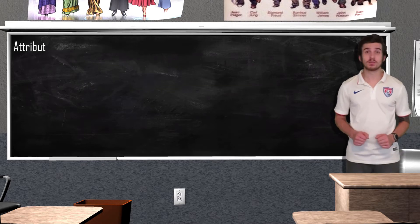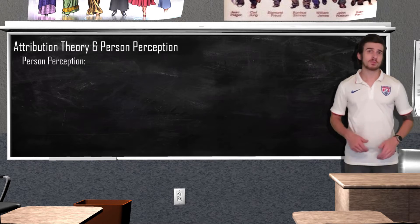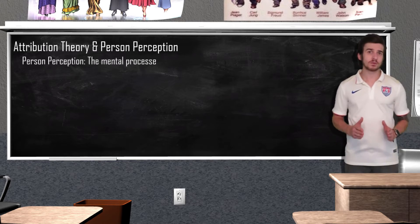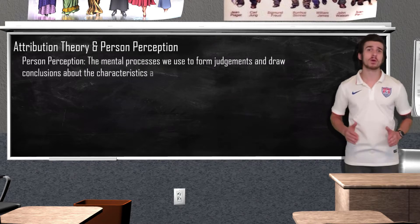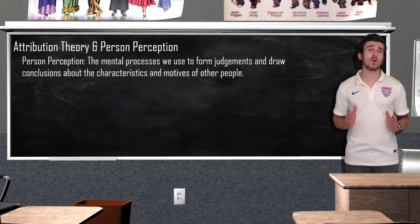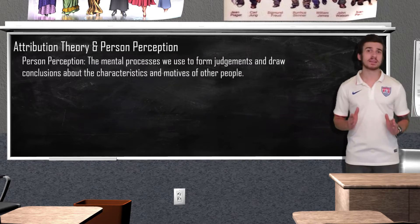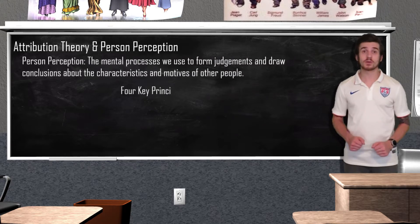Now let's dig a little deeper into the field of social psychology. We're going to take a look at attribution theories and person perception. Person perception refers to the mental processes that we use to form judgments and draw conclusions about the characteristics and motives of other people. According to research done by social psychologists, in one-tenth of a second, we evaluate others' attractiveness, likeability, competence, trustworthiness, and aggressiveness. Four key principles are going to guide person perception.